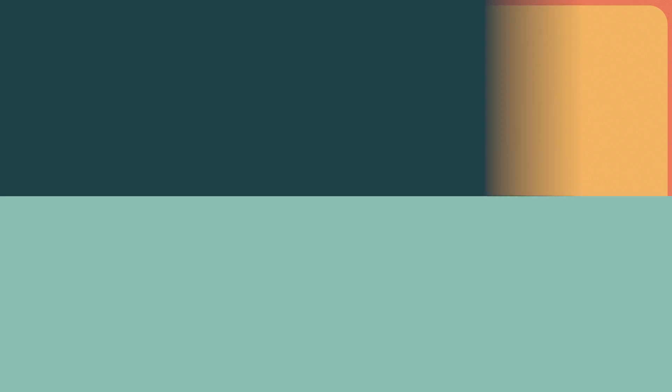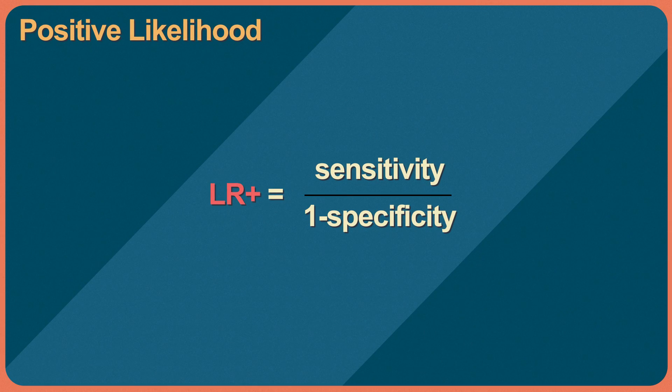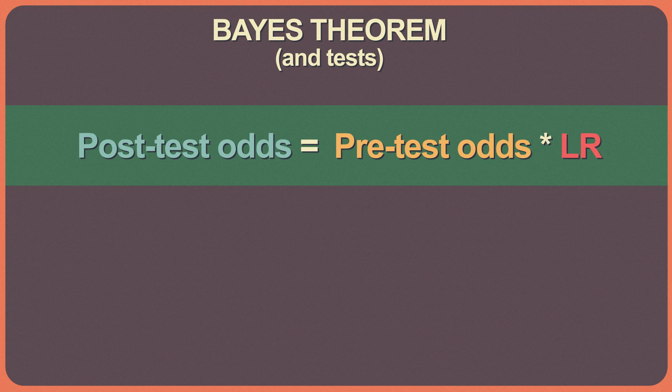You look at a patient. You determine, based on her story and physical exam, what the chance is she has fake-itis. You get a test, and then you do a calculation where you have a new chance that she has fake-itis — and it involves sensitivity and specificity. You use them to calculate a likelihood ratio. A likelihood ratio is the probability that a test is correct divided by the probability that it's incorrect. They come in two flavors — positive and negative — to assess the value of a positive and negative test result. Bayes' theorem works out that post-test odds equals pre-test odds times likelihood ratio.